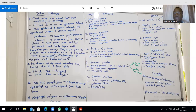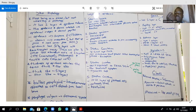Nails embryologically develop on the palmar aspect of the hand as well as the plantar aspect of the foot, and then migrate to the dorsal side. You also talk about nail plates and nail beds from your gross anatomy.